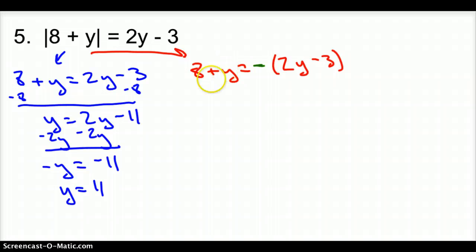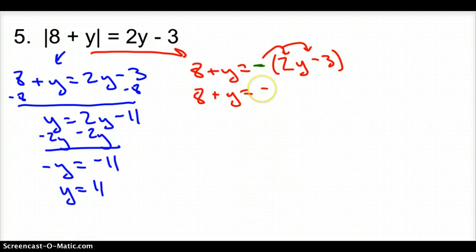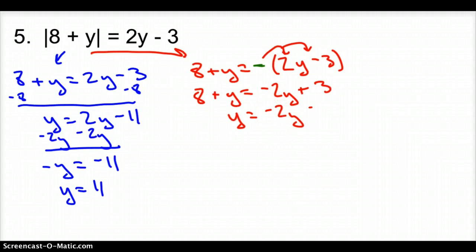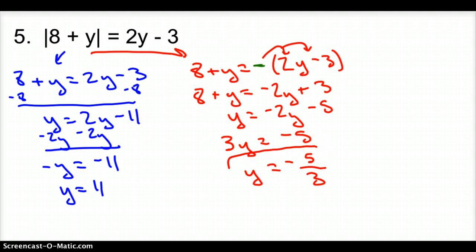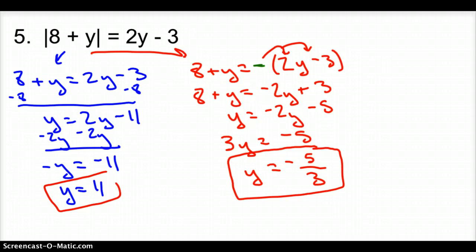Now for the second equation — we made the right side negative, so we distribute that negative: 8 plus y equals negative 2y plus 3. Subtract 8: y equals negative 2y minus 5. Add 2y: 3y equals negative 5. Divide by 3: y equals negative 5 thirds. So our two answers are y equals 11 and y equals negative 5 thirds — they are not opposites of each other.